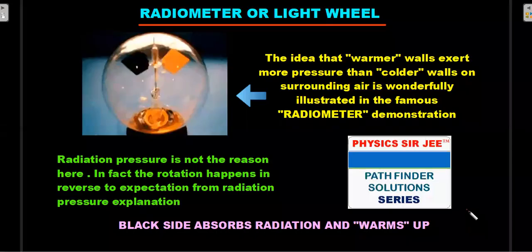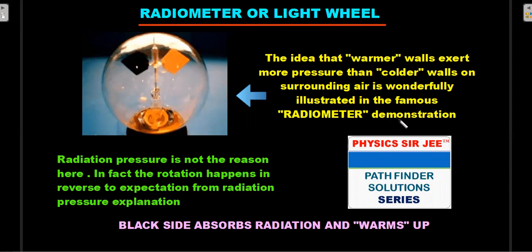The demonstration of this principle is the radiometer, or light wheel. The idea that warmer walls exert more pressure than colder walls on surrounding air is wonderfully illustrated in the famous radiometer demonstration. There are many misconceptions about how it works online. The device has a shinier part and a darker or black part — you shine light on it and the wheel starts rotating.